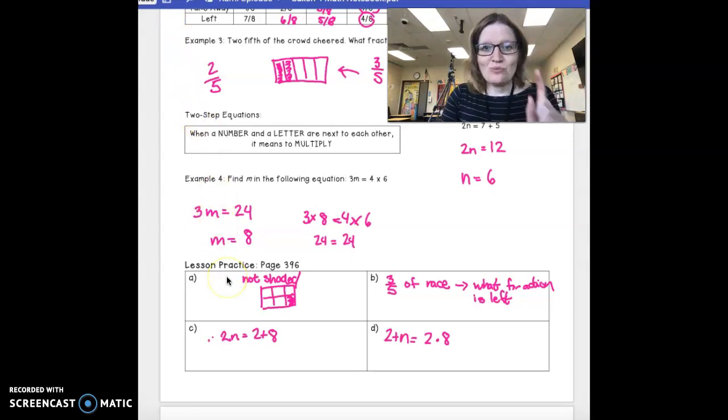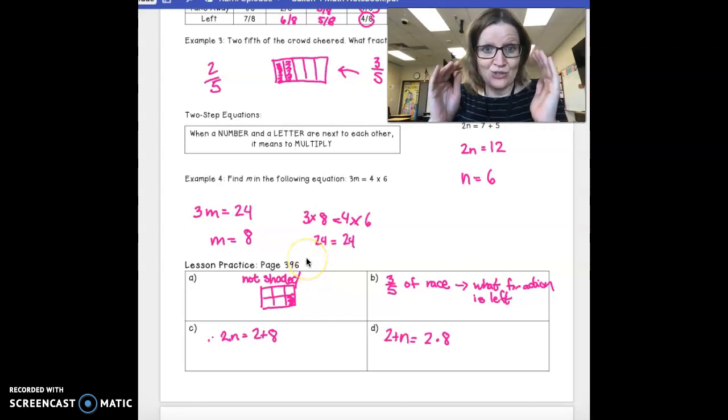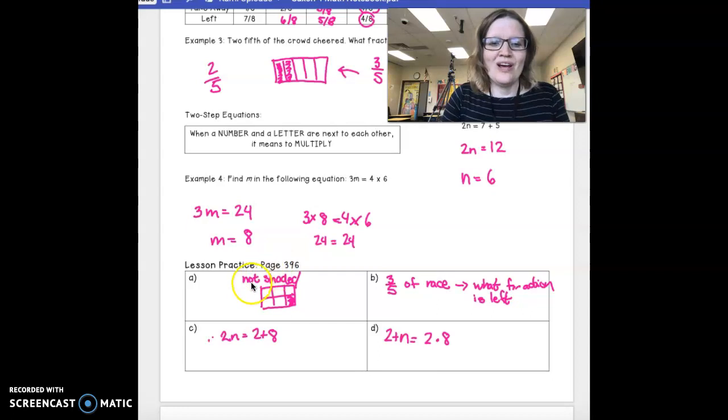They want to know, this is really important, they want to know what is not shaded. Saxon is famous for doing this on tests, tricking you into thinking you want to answer what is shaded. Please note, they want to know what is not shaded.